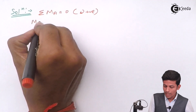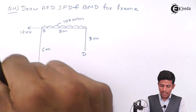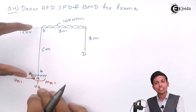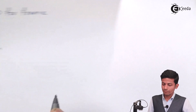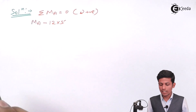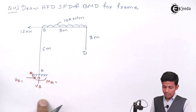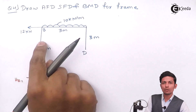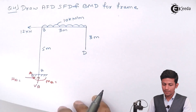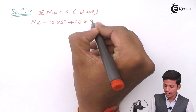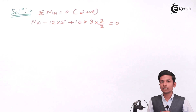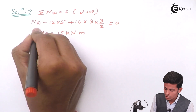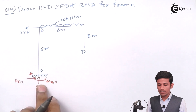The 12 kN horizontal load acts anti-clockwise about A, so we get minus 12 × 5. The UDL is clockwise, converted to a point load: 10 × 3 × (3/2). Setting the moment equation to zero: MA − 12×5 + 10×3×(3/2) = 0, giving MA = 15 kN·m. The positive result confirms our assumed direction is correct.